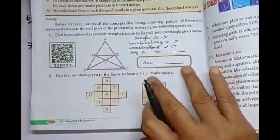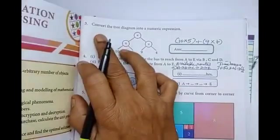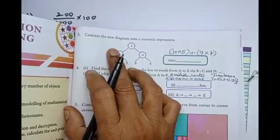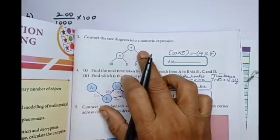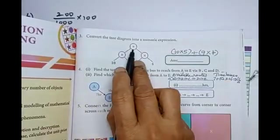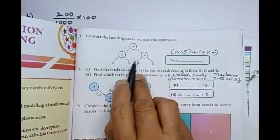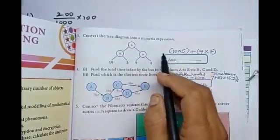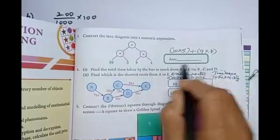Next, third one. Convert. You put the tree triangle into a numeric expression. Here, plus, into, into. Here, 10, 5, 9, 4. You want to change numeric expression.